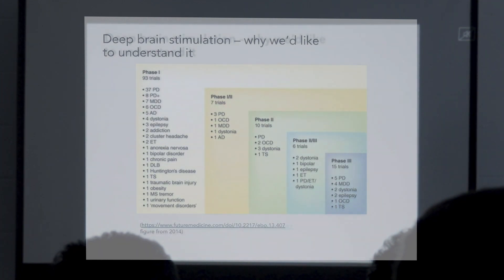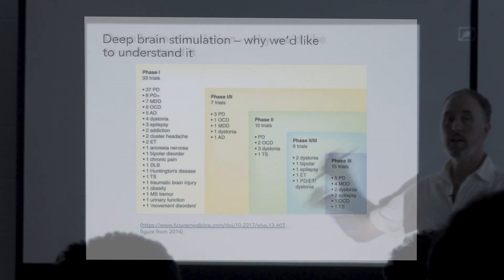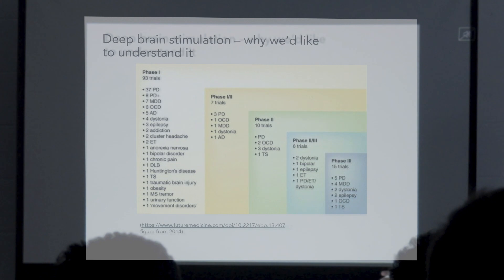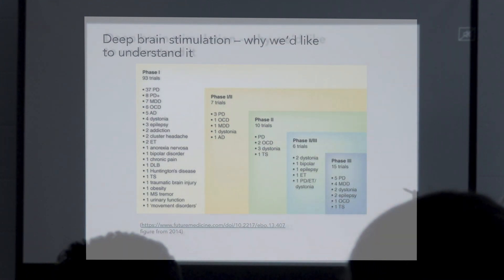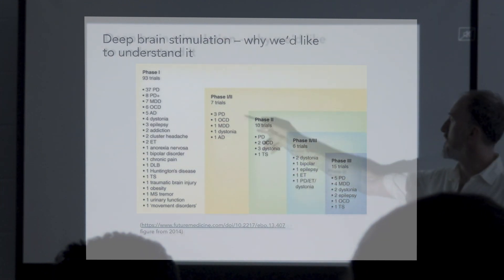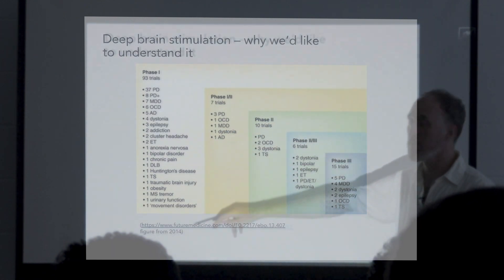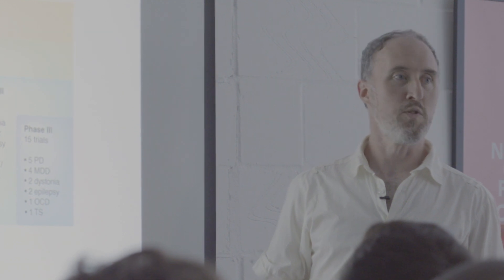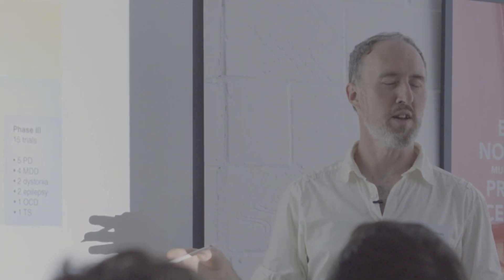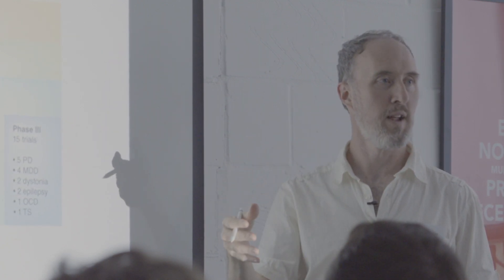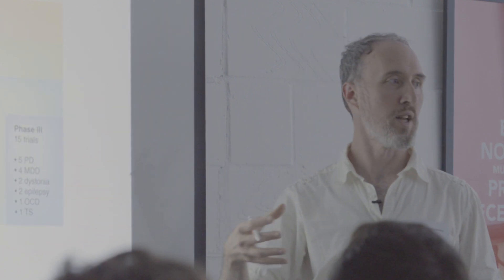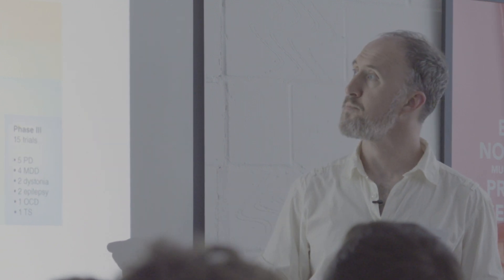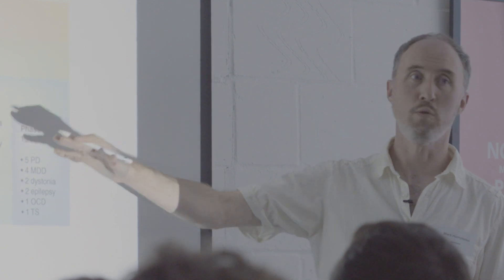Deep brain stimulation is now being used for an extraordinary range of things — this figure from 2014 summarises clinical trials including Parkinson's disease where it was first established, major depressive disorder, OCD, Alzheimer's disease, and in phase one, more speculative applications: Tourette's syndrome, chronic pain, bipolar disorder, and addiction. We'd like to understand where it might work, what setup would best change the spiking, and what errors in spiking existed in the first place — but we don't know, because we have no ability to record spiking across the human brain.